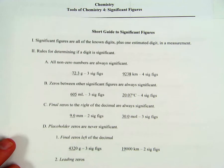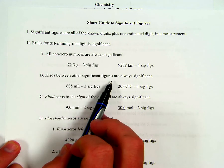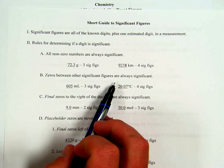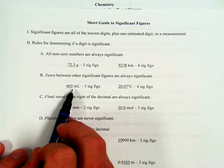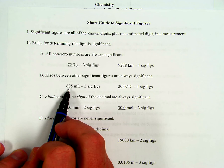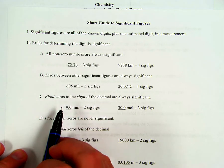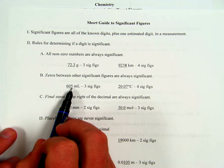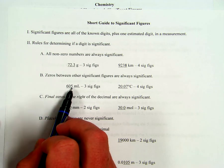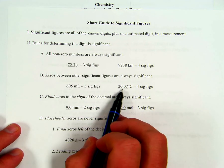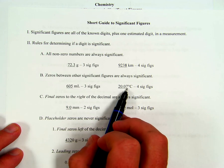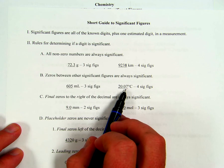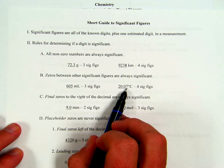Rule two: zeros between other sig figs — in other words, between non-zeros — are always significant. For 605 milliliters, the six and five are significant, making the zero in between them significant as well: three sig figs, with five as the estimated digit. Similarly, 20.07 degrees Celsius has four sig figs; both zeros are between non-zeros, and the seven is the estimated digit.